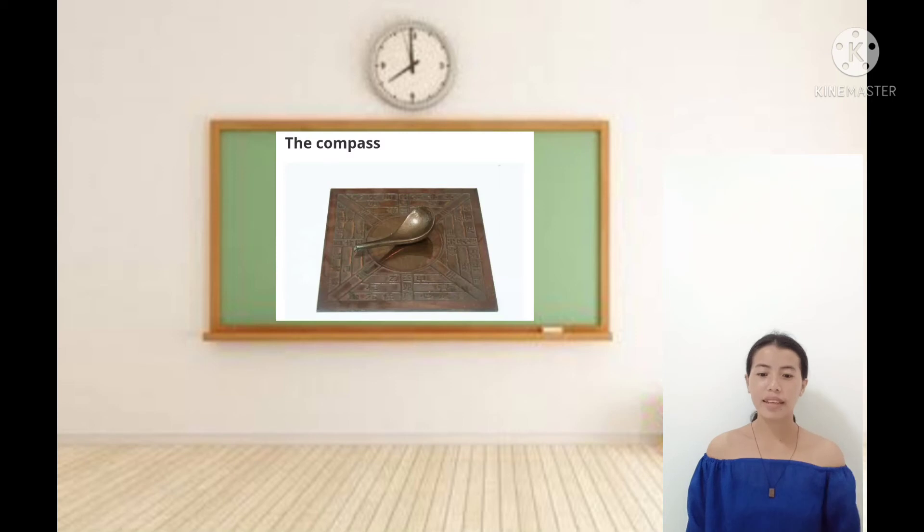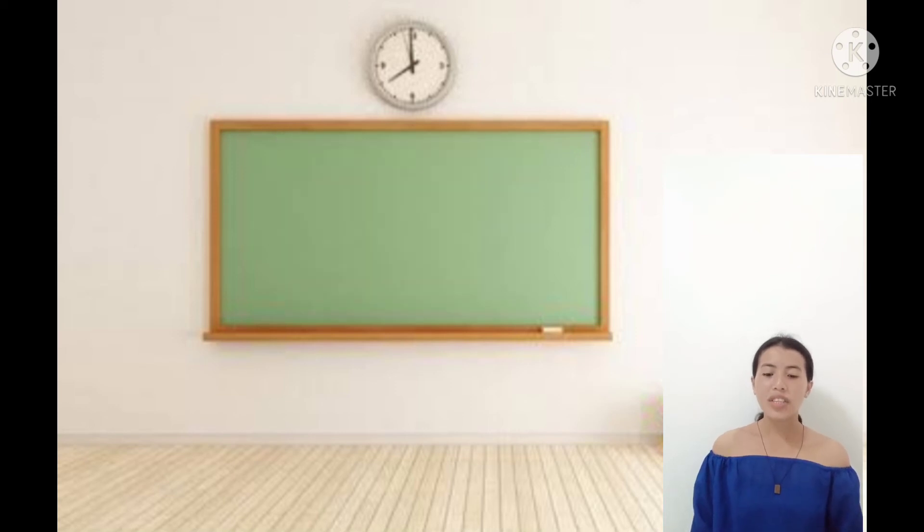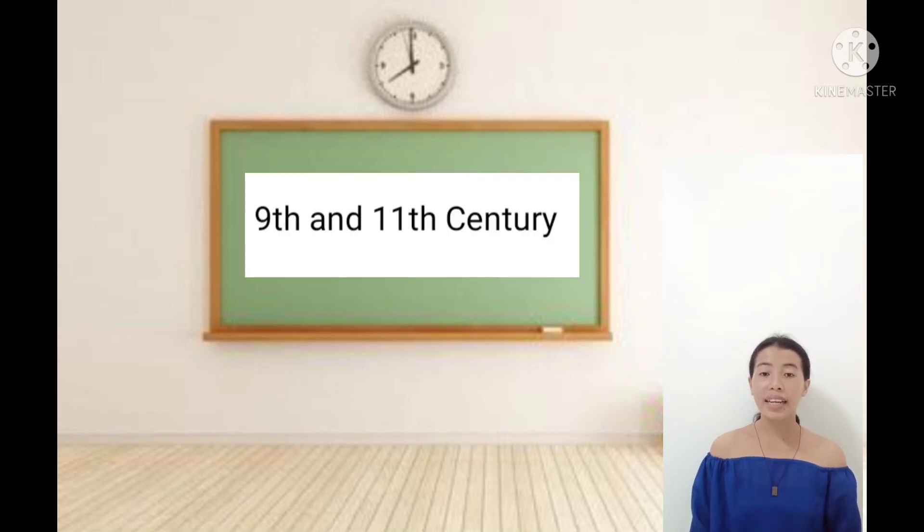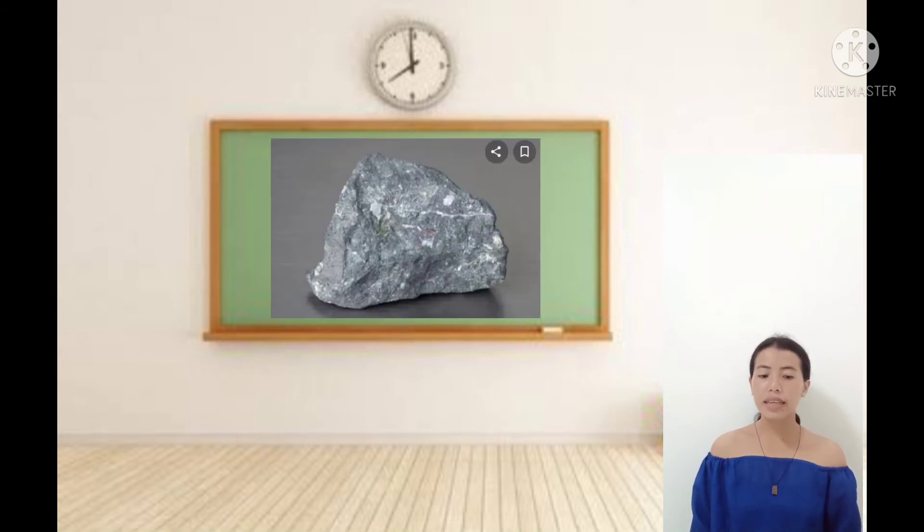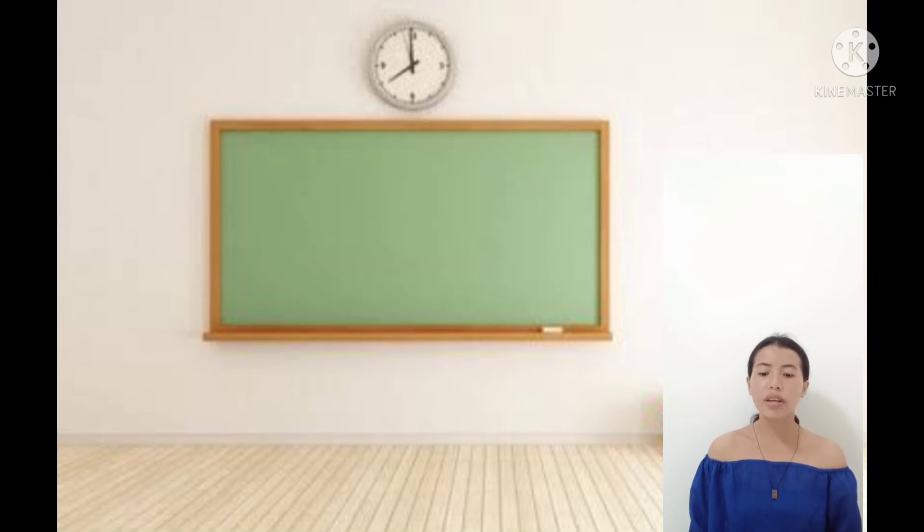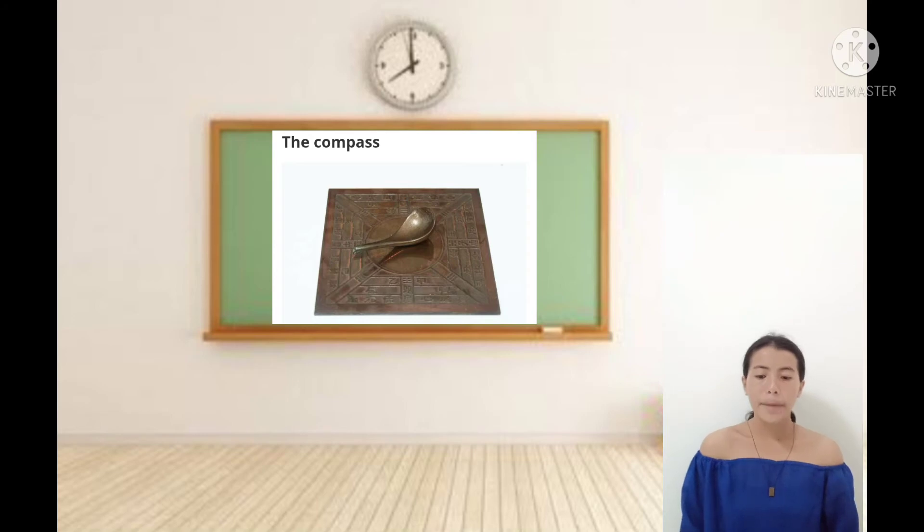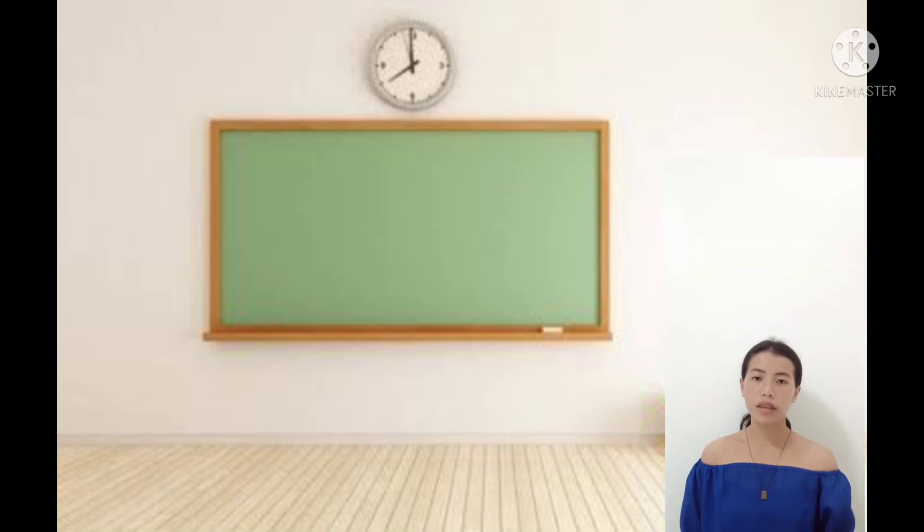Third, the compass. The Chinese invented the first compass sometime between the 9th and the 11th century. It was made of lodestone, a naturally magnetized iron ore, the attractive properties of which they had been studying for centuries. This picture is a model of an ancient Chinese compass from the Han Dynasty. It is a south-indicating ladle made of polished lodestone.